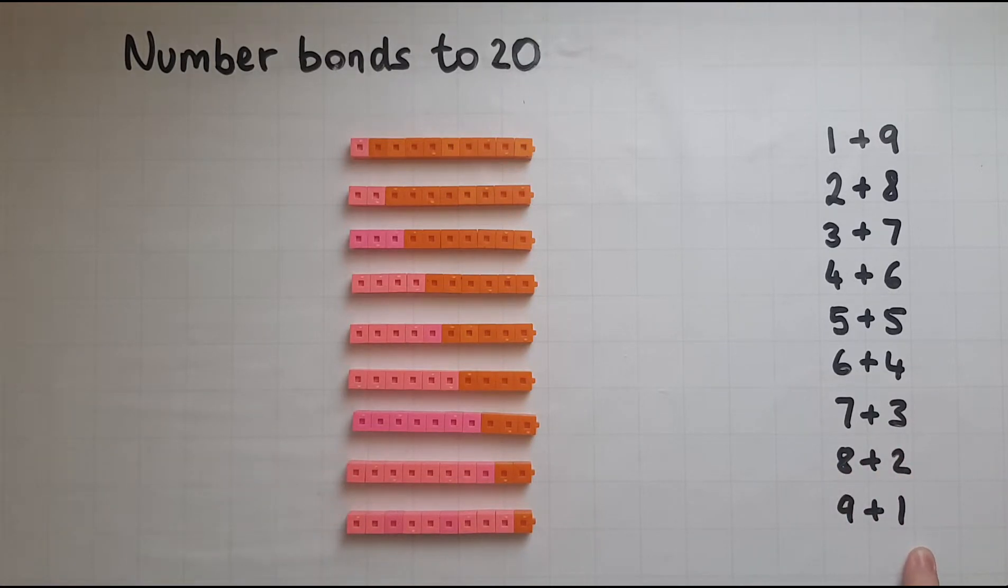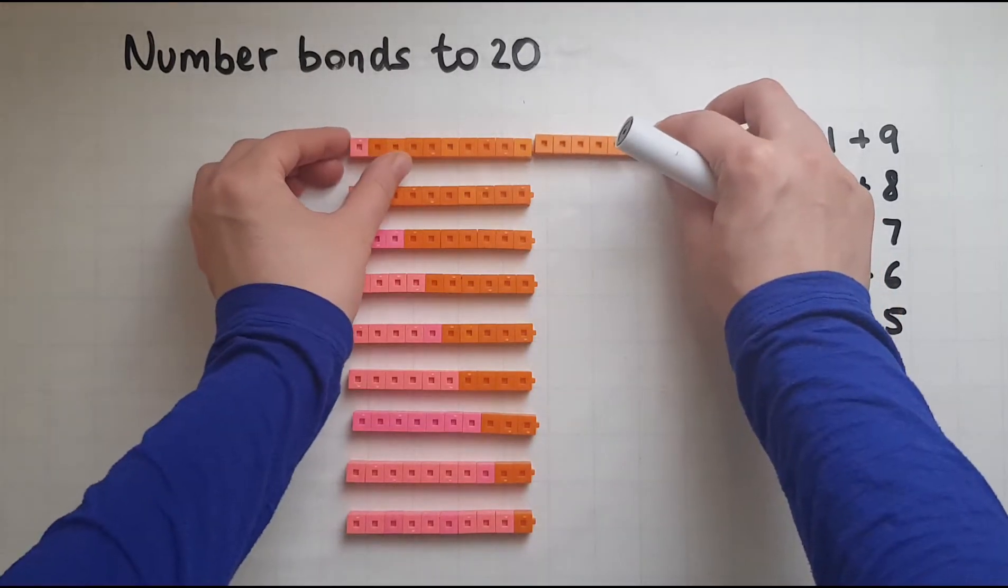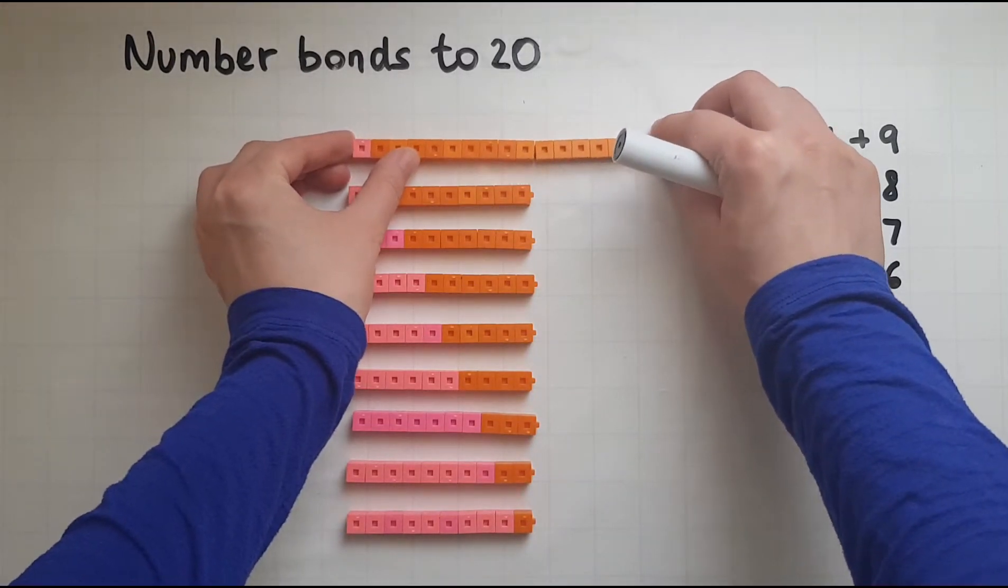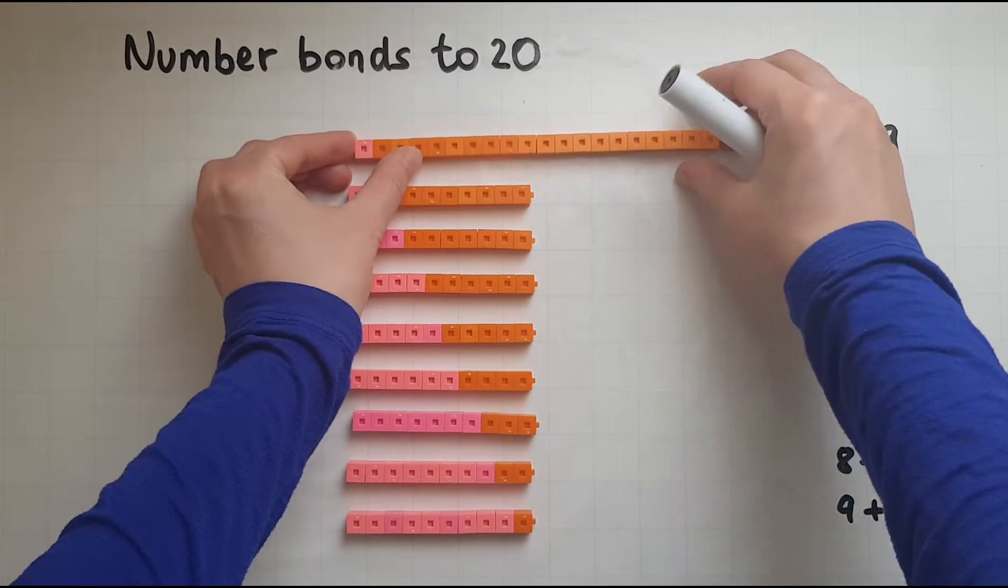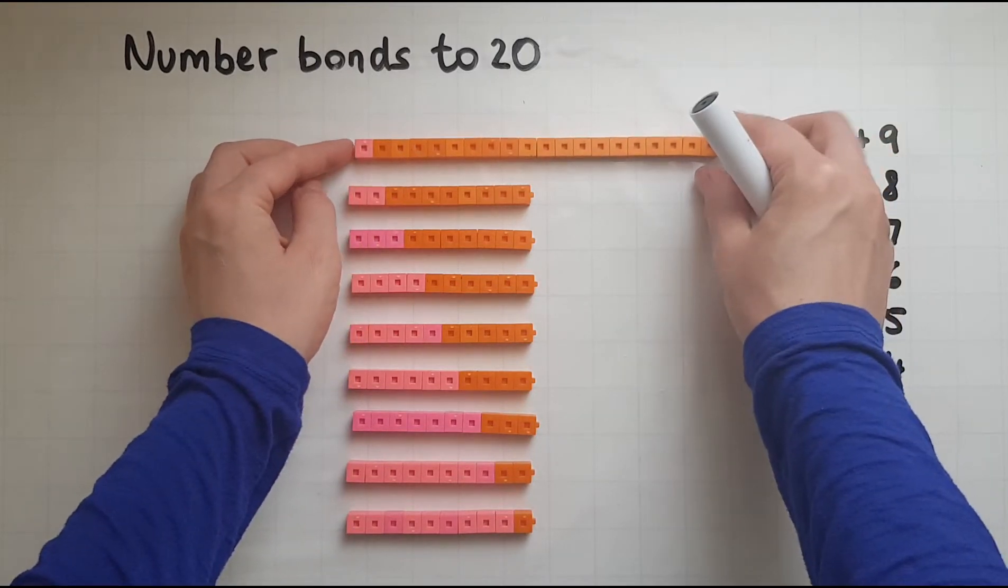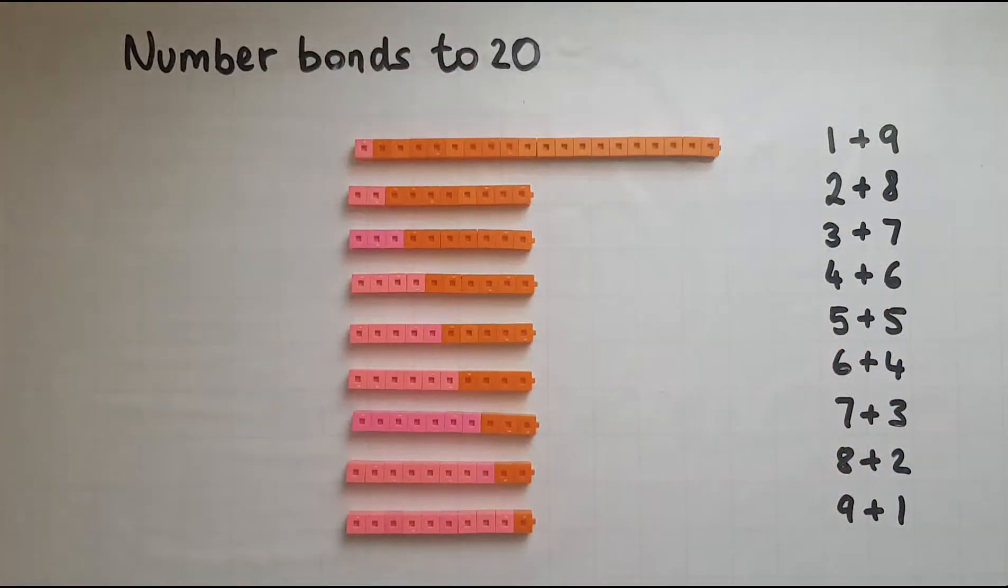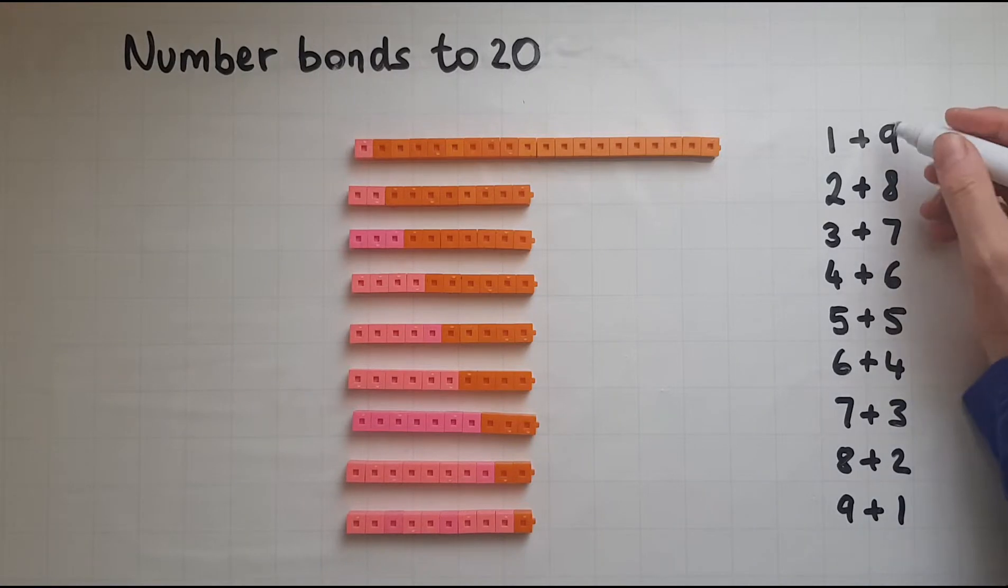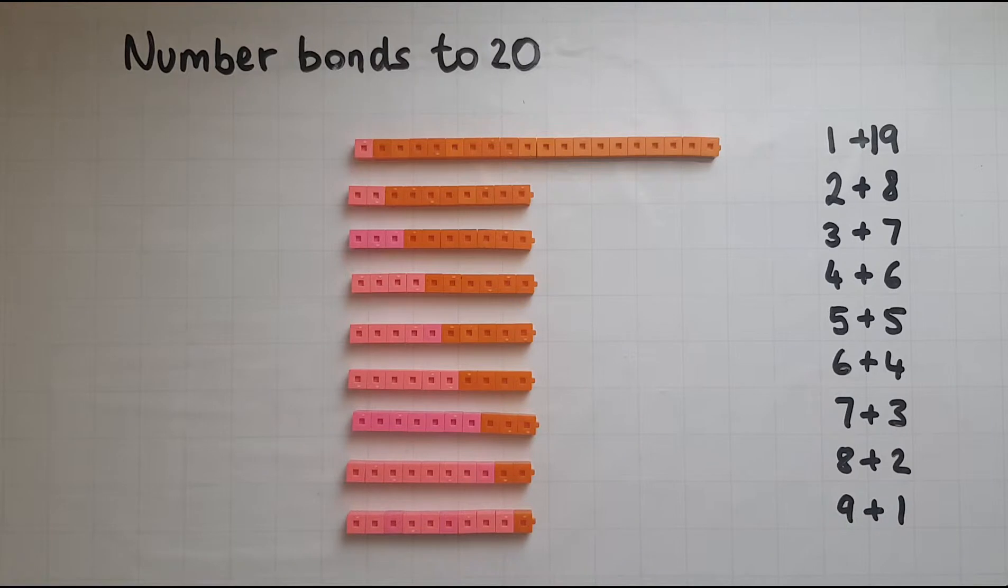Now I will try to make a total of 20. So I have 1 already there, 1 pink cube. If I add 19 orange cubes that makes 20. So all I'm going to be changing from the 9 is adding a digit 1 in front. So 1 and 19 makes 20.